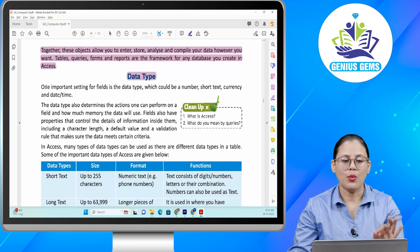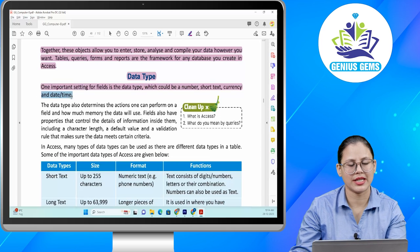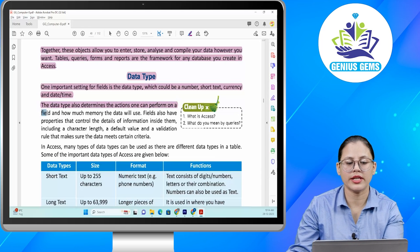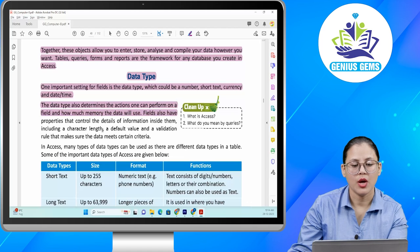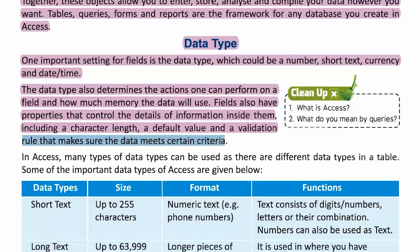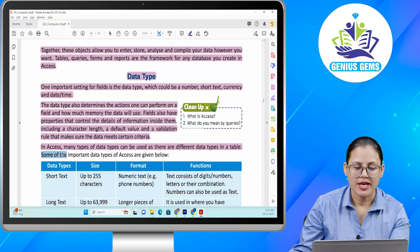Data type. One important setting for fields is the data type, which could be a number, short text, currency and date or time. The data type also determines the actions one can perform on a field and how much memory the data will use. Fields also have properties that control the details of information inside them, including character length, a default value and a validation rule that makes sure the data meets a certain criteria. In Access, many types of data types can be used as there are different data types in a table. Some of the important data types of Access are given below.